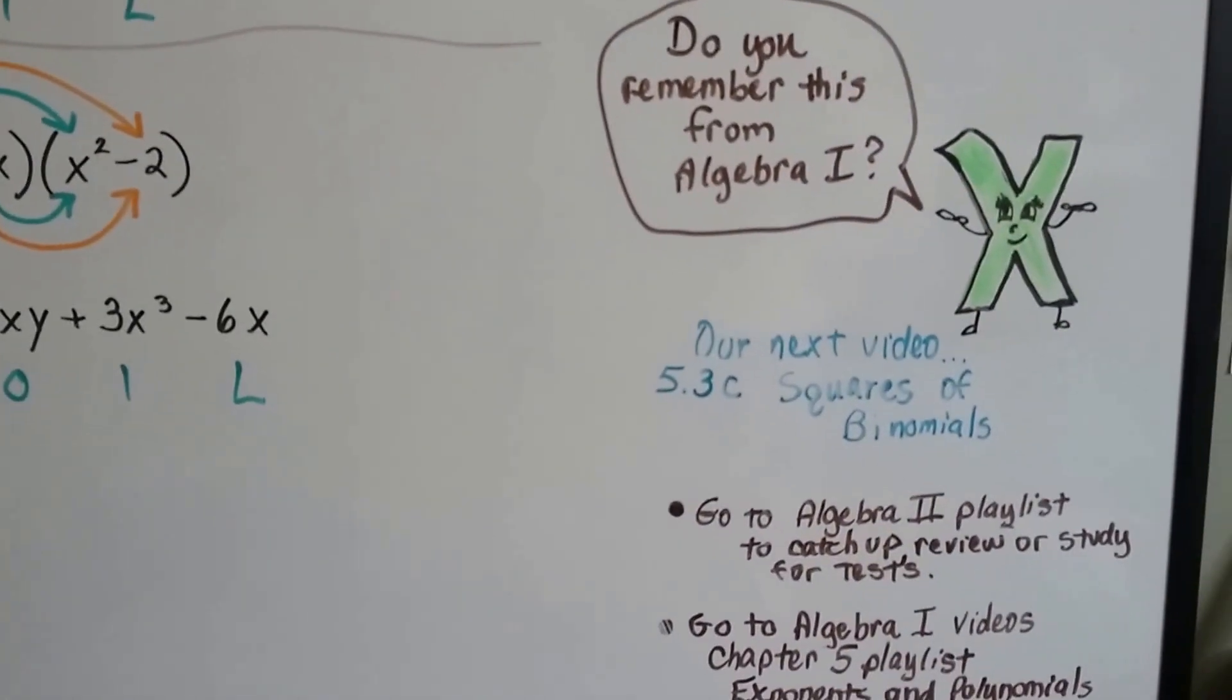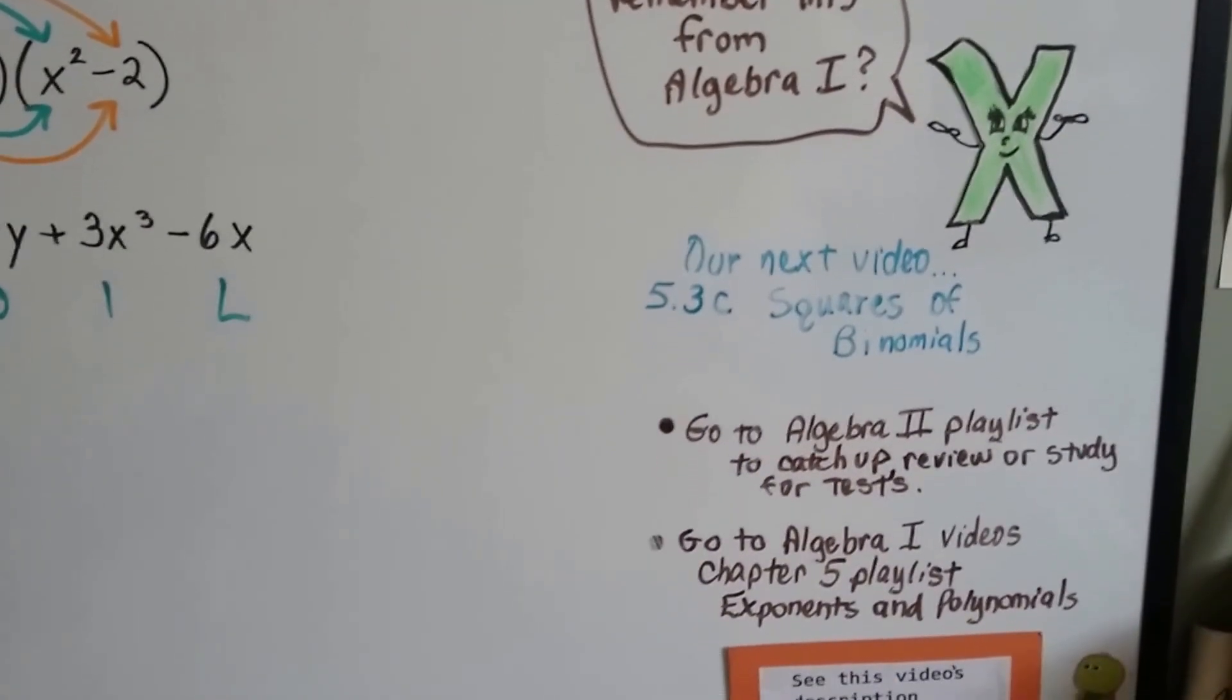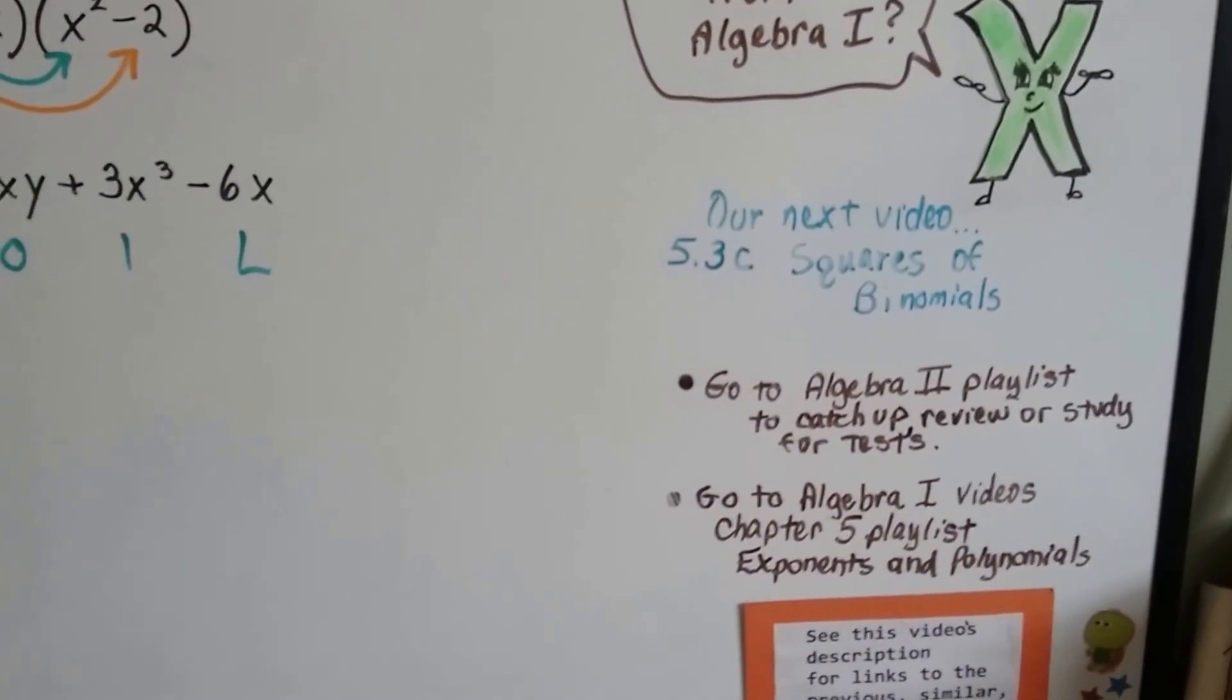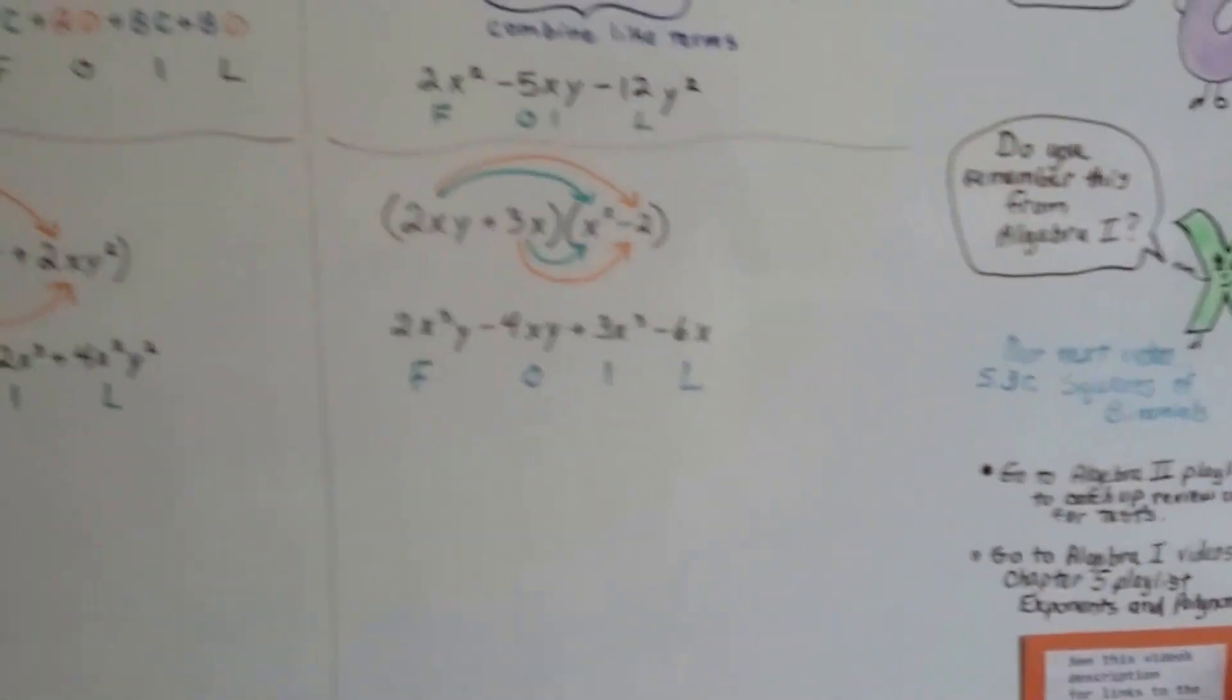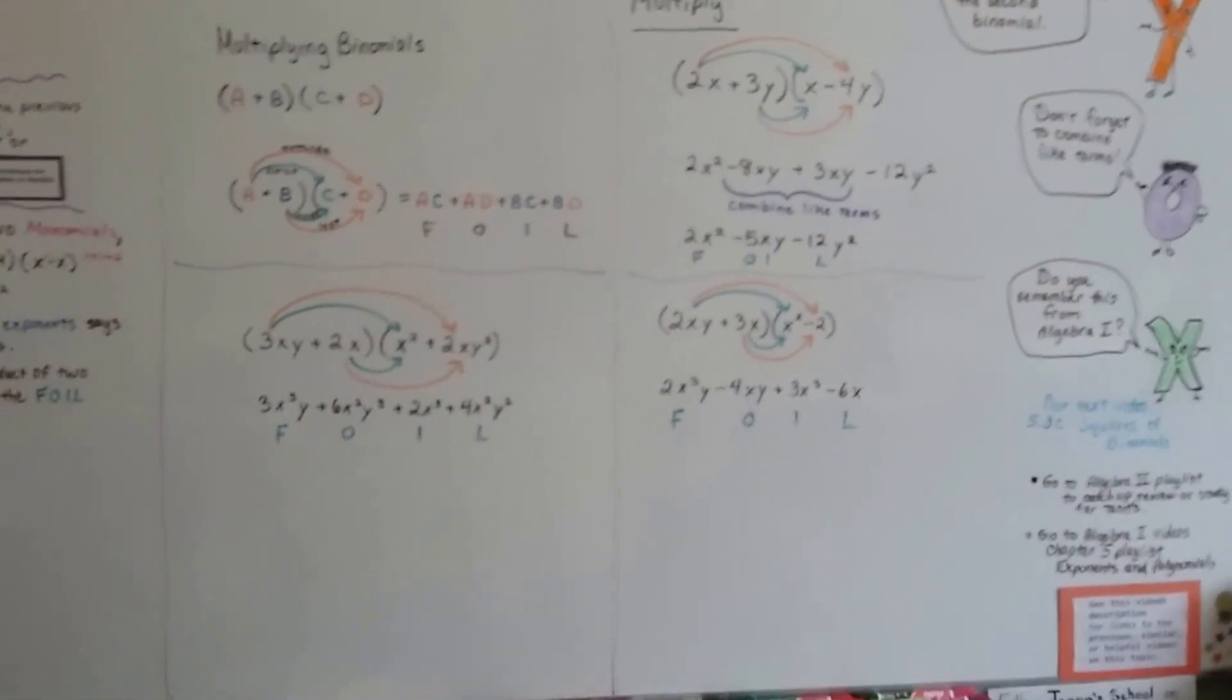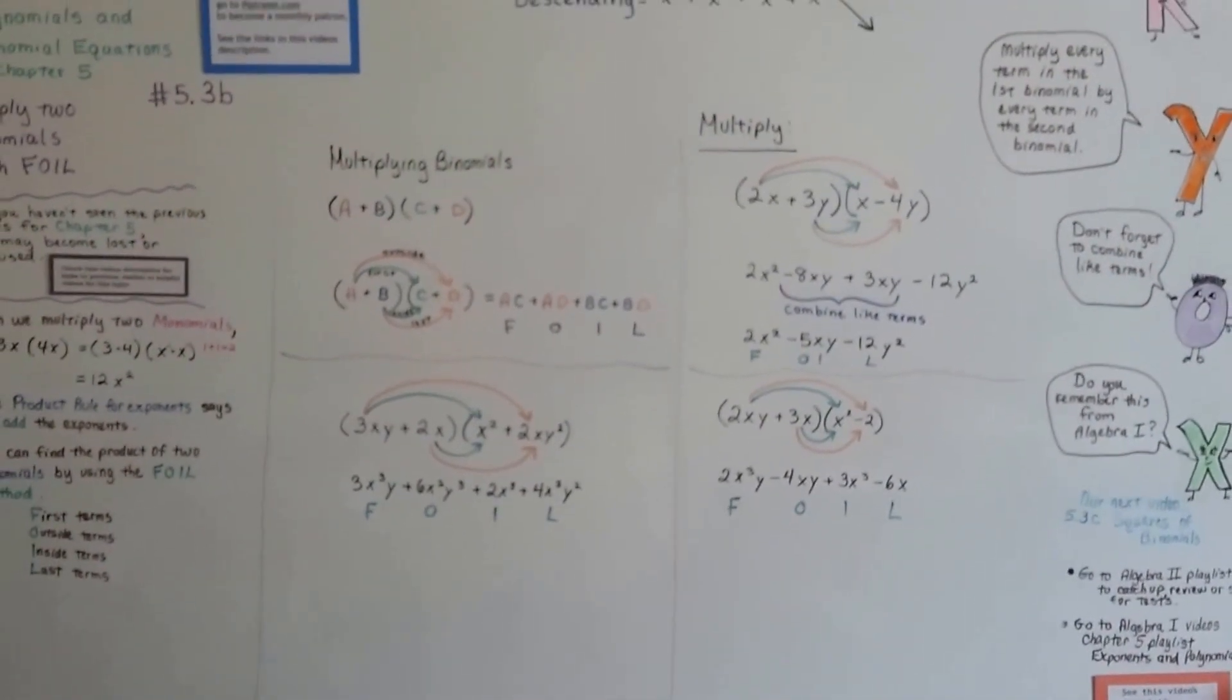Our next video, 5.3c, we're going to talk about squares of binomials. I'm going to add this video to the Algebra 2 playlist. And that Chapter 5 from Algebra 1 is going to be in here. So you can go into the description of this video, click on the links, and see all the previous videos for Chapter 5 that we've discussed so far and the stuff from Algebra 1 and the entire playlist for Algebra 2.